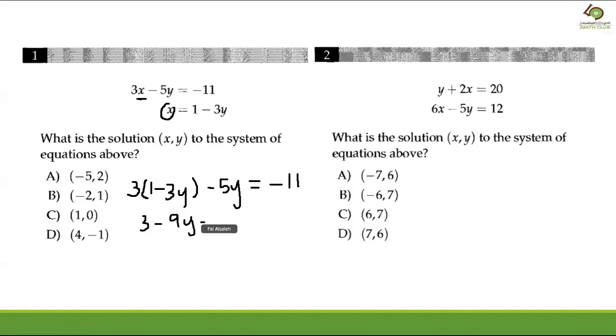minus five y is equal to negative 11. And then you combine the like terms, so negative nine y minus five y is going to be negative 14y. And then you move the